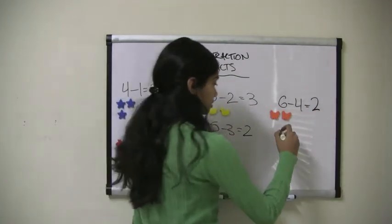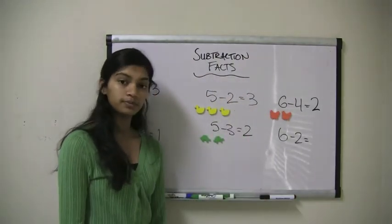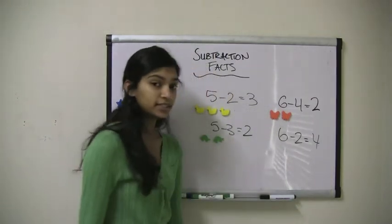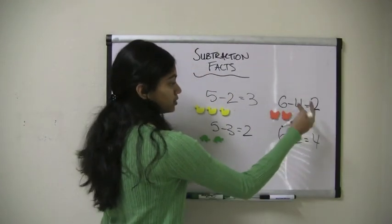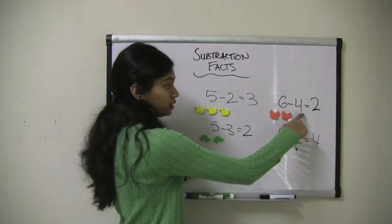But what if I had 6 minus 2? Can you tell me what this must equal? Yeah, it equals 4, because all I did was flip these two numbers. So if we have 6 minus 2, the answer must equal 4.